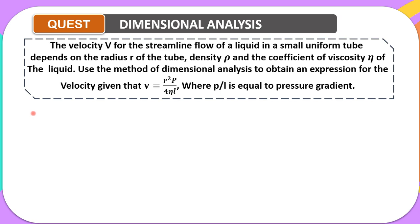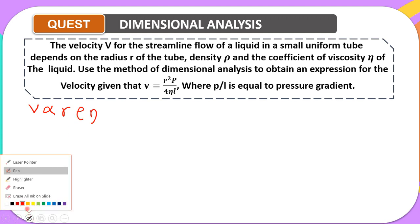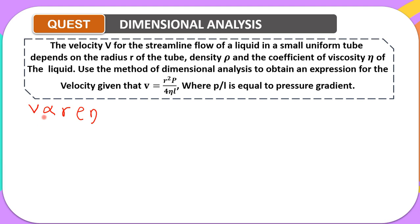First, we bring out each of the parameters given. The velocity v for the stream flow is dependent on the radius r of the tube, the density rho, and the coefficient of viscosity. Since v depends on r, rho, and the coefficient of viscosity, we write v is proportional to r, rho, and viscosity. Changing the proportionality sign, we put k, so v equals k times r times rho times the coefficient of viscosity.